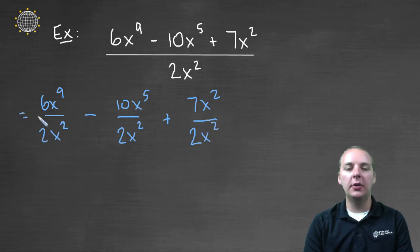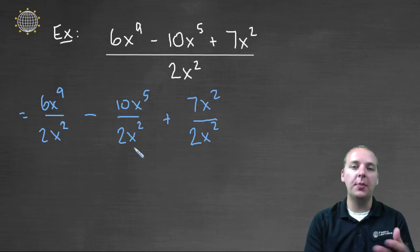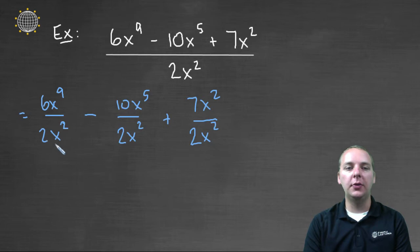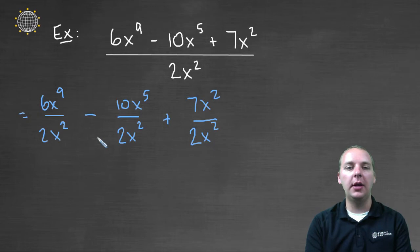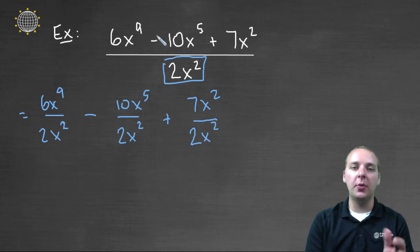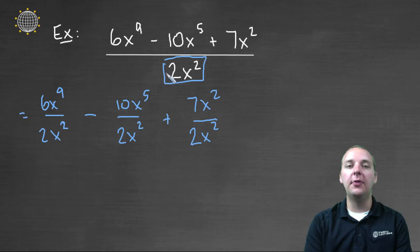And before we go any farther, just to clarify, the reason that this works is imagine starting with an expression like this. Well this would be like adding or subtracting different fractions that have a common denominator. They all have a denominator of two x squared. And so as we well know, when you add fractions with a common denominator, you just keep that common denominator, and then the arithmetic happens in the numerator. So you'd have six x to the ninth, minus ten x to the fifth, plus seven x squared for your numerator. Well we're just using that idea just backwards. And so if we are dividing by a monomial, we'll break it up into three separate fractions.